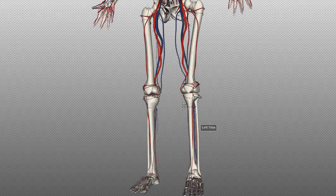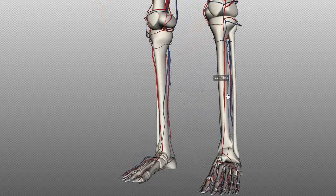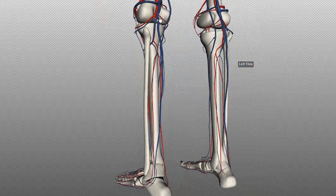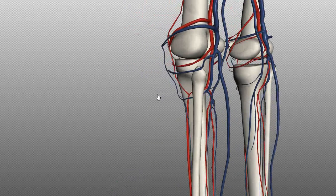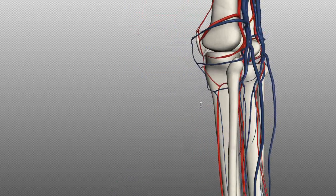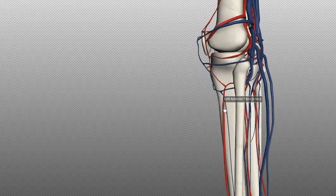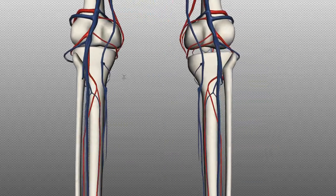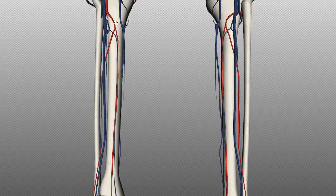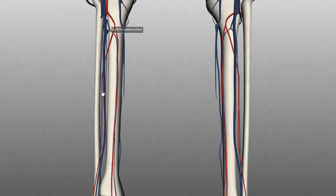Looking at the front of the body — the anterior surface of the tibia — and at the back, you can see the popliteal artery branching off and winding around just underneath the fibula to form the anterior tibial. At the back, you've got two branches: the posterior tibial artery, which runs down the posterior surface of the tibia, and the peroneal artery, which runs laterally on the posterior surface.